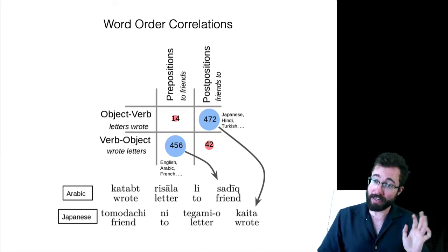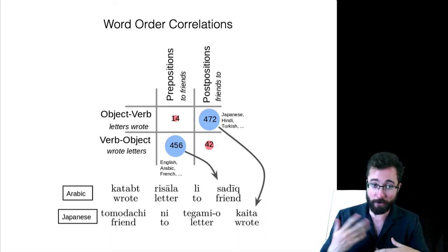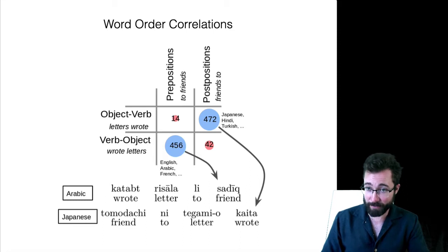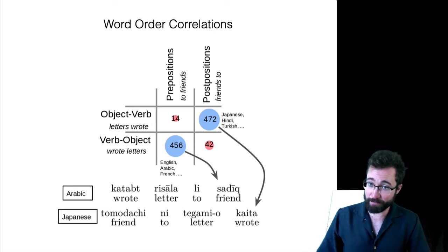There's not a lot of languages that have object-verb order but prepositions. Conversely, when you have verb-object order, you almost always have prepositions in your language, not postpositions. So there's this correlation of the order of the adposition and the order of the object and the verb. Greenberg pointed out a lot of correlations of this form.